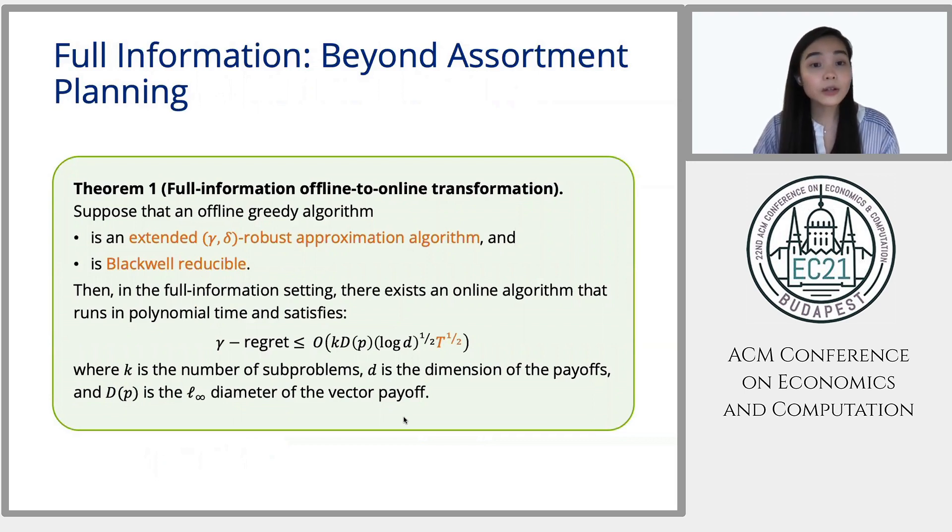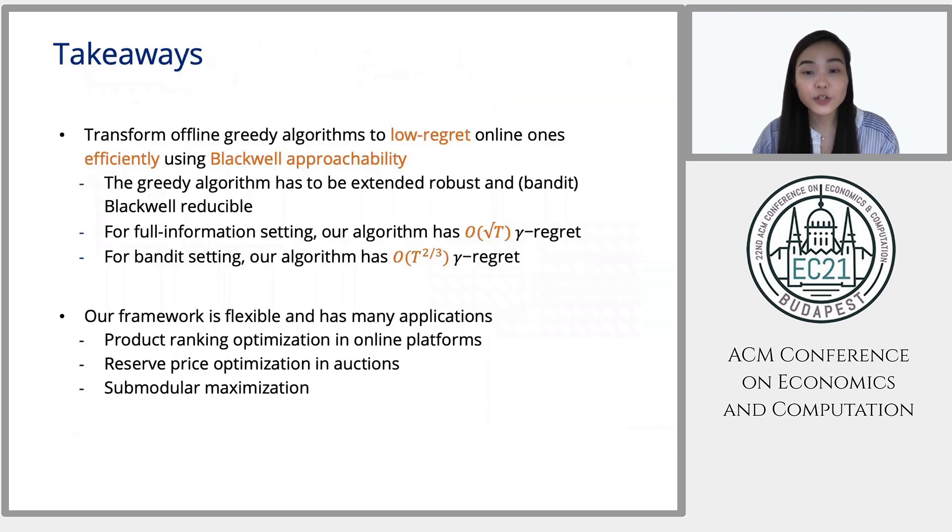All right. I will conclude now. So we designed an efficient framework to transform offline greedy algorithms to their online counterparts that have low regret via Blackwell approachability for both full information and bandit feedback settings. The greedy algorithm has to be extended robust and Blackwell reducible for the full information setting or bandit Blackwell reducible for the bandit setting. We have square root of t regret for the full information setting in general and t to the two-third regret for the bandit setting. But the most exciting part is that our framework is flexible and has many applications, from product ranking to reserve price optimization in auctions and submodular maximization. It also improves the regret bounds for many applications.